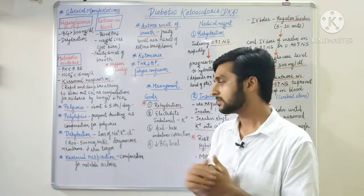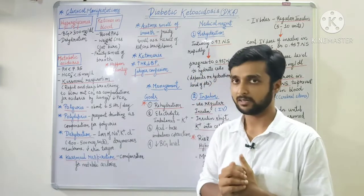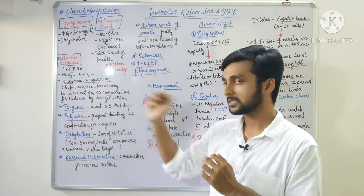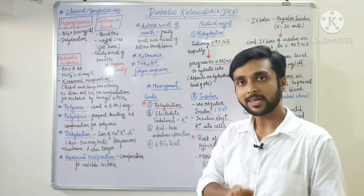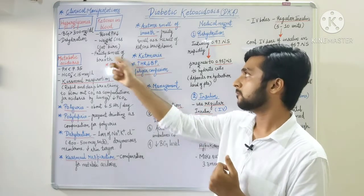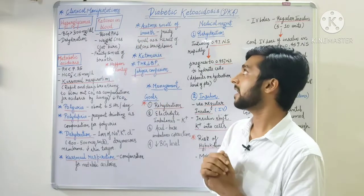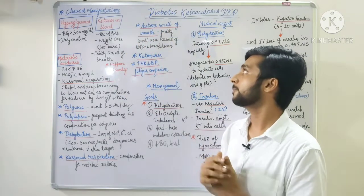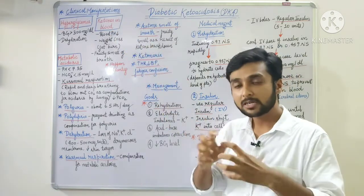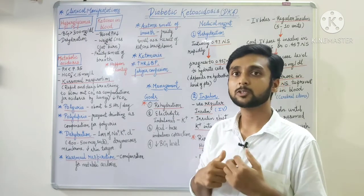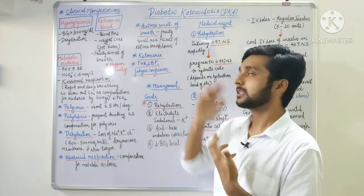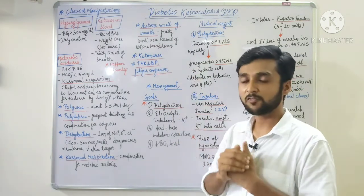Other dehydration symptoms include dry mucous membranes and decreased skin turgor. We also see Kussmaul respiration as compensation for metabolic acidosis by the lungs. Additionally, there is a fruity smell of breath or acetone smell of breath, because ketones undergo further breakdown and the by-product is released in the breath as a fruity or acetone smell.